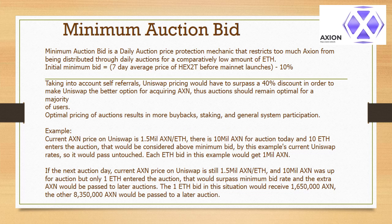Minimum Auction Bid is a daily auction price protection mechanic that restricts too much Axion from being distributed through daily auctions for a comparatively low amount of ETH. The initial minimum bid equals the 7-day average price of Hex2T before Mainnet launches minus 10%. Taking into account self-referrals, Uniswap pricing would have to surpass a 40% discount in order to make Uniswap the better option for acquiring AXN. Thus, auctions should remain optimal for a majority of users. Optimal pricing of auctions results in more buybacks, staking, and general system participation.